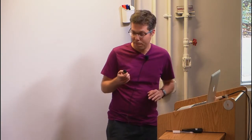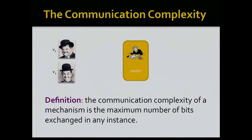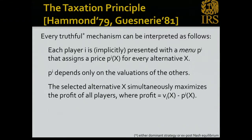I'm going to fix any truthful mechanism and define two notions of complexity of this mechanism, then study the relationship between them. The first notion is a standard one: the communication complexity of the auction or mechanism in general. We have two players with valuations v1, v2, a center, the players exchange bits with the center until we get some selected alternative and the associated payments. The communication complexity is the maximum number of bits exchanged in any instance.